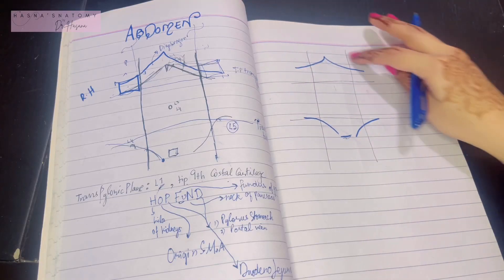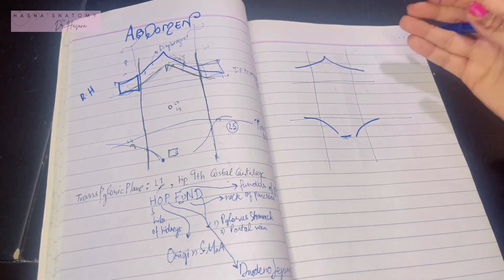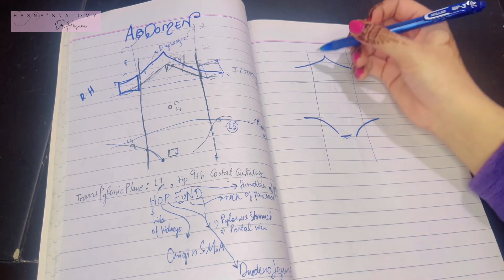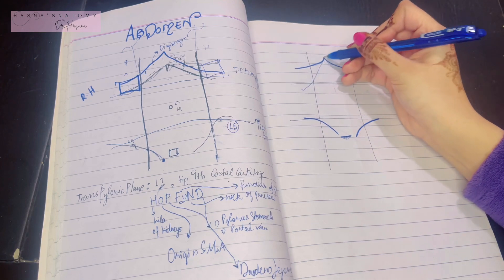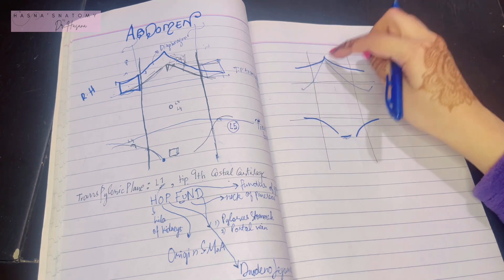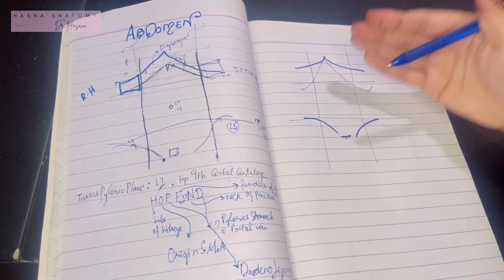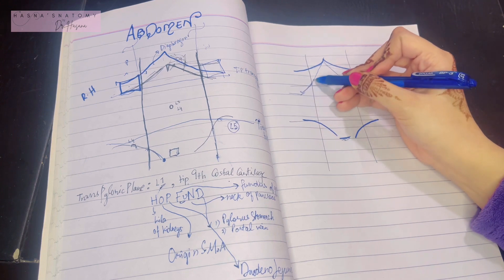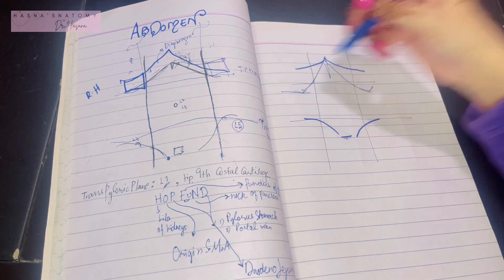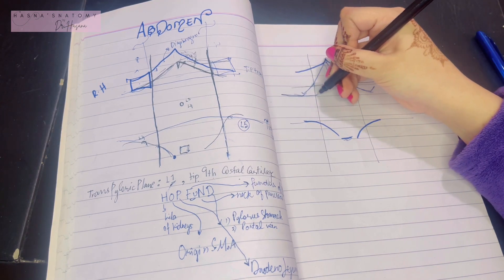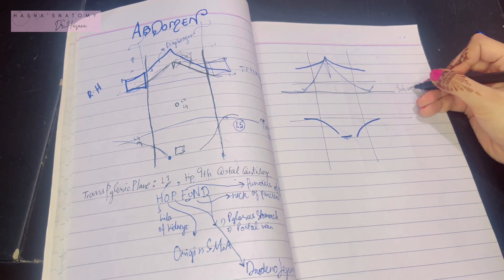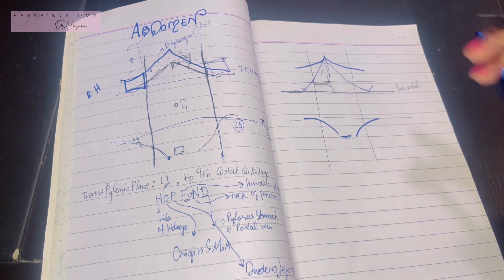We have talked about a couple of planes; now we can move ahead and talk about other planes that are also important. There is another plane—let's suppose this is the costal margin. The costal margins are very important. This is the xiphoid process. There's a transverse plane that passes through the lower parts of the costal margins; this is known as the subcostal plane.